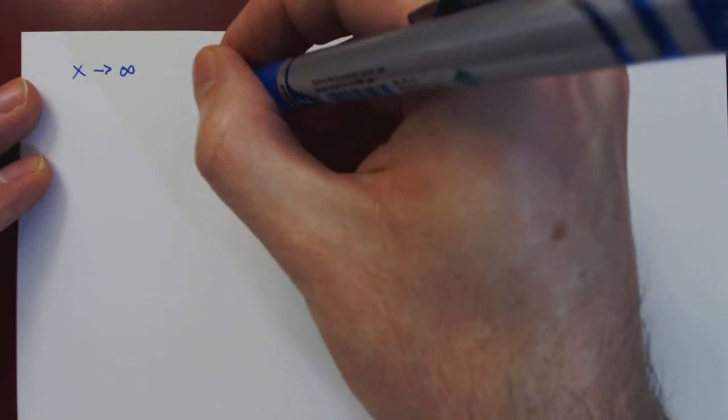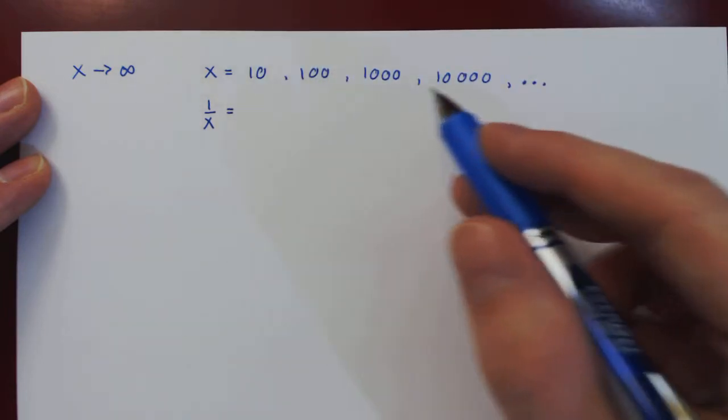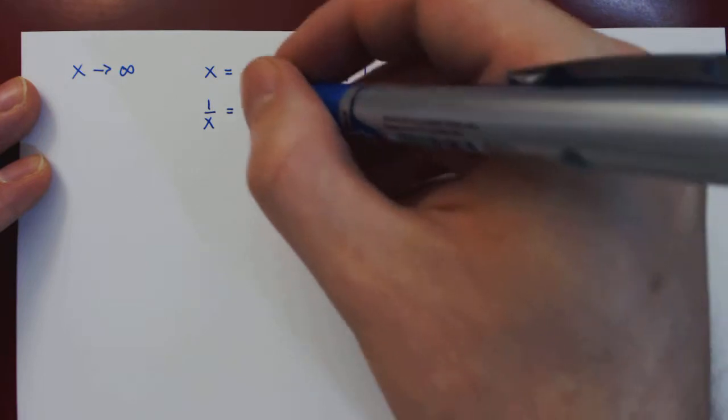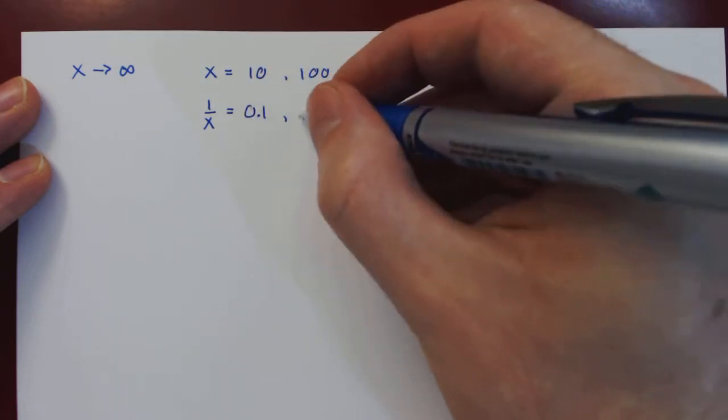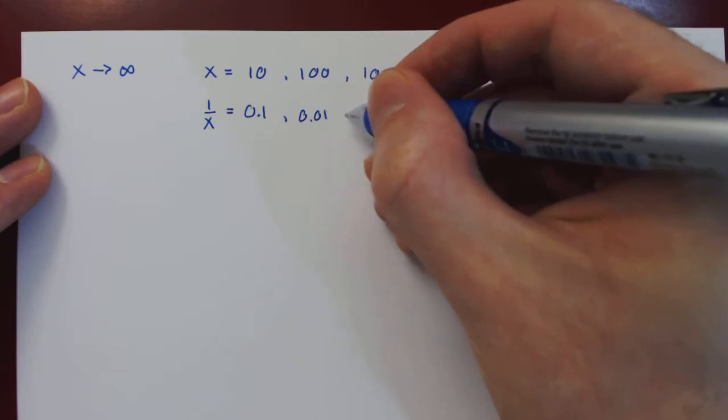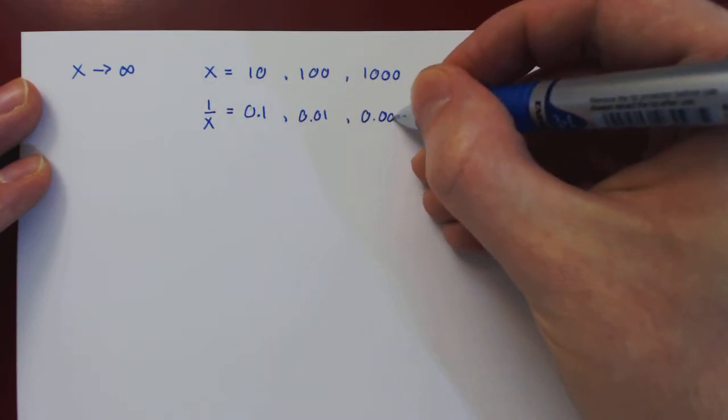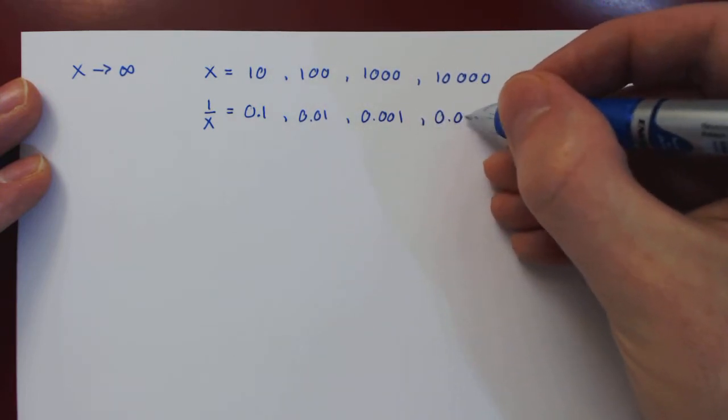And so if we look now at the reciprocal 1 over x, following the same sequence of values of x, then 1 over x: 1 over 10 is 0.1, and 1 over 100 is 0.01, 1 over 1000 is 0.001, 1 over 10,000 is 0.0001, and so on.